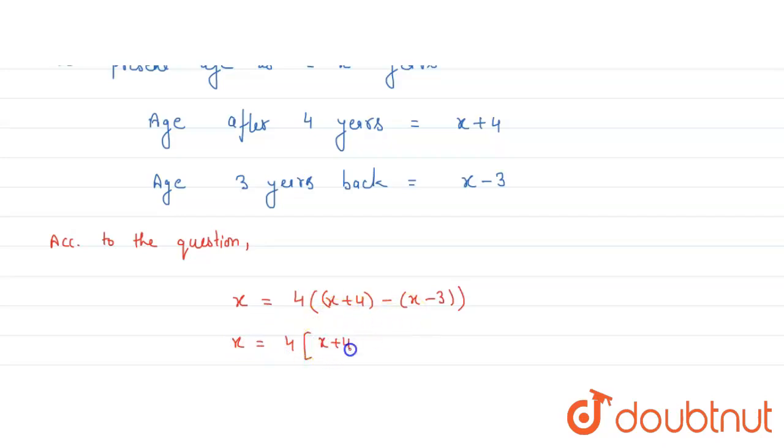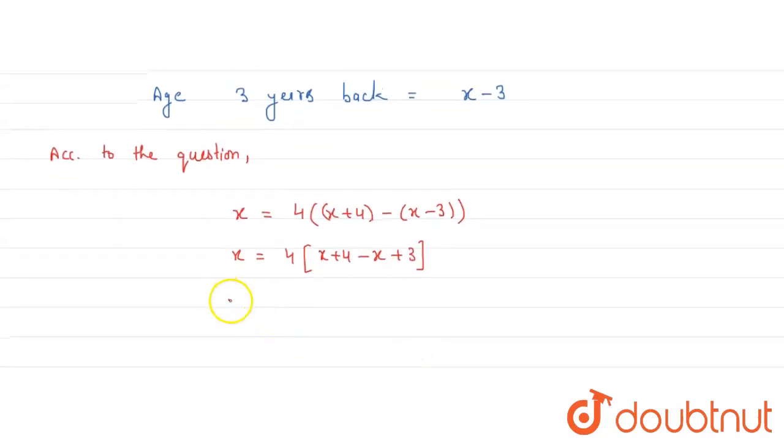So x plus four, this minus and x becomes minus x, this minus and minus three becomes plus three. Now x is equal to, this positive x and negative x cancel out, so we get four.